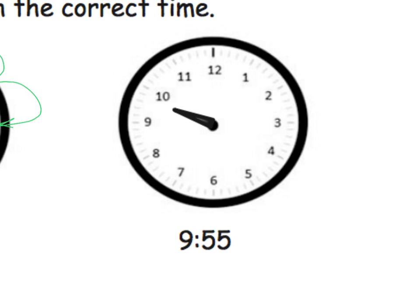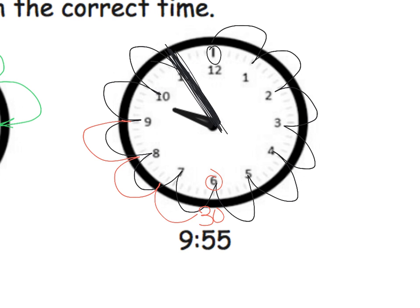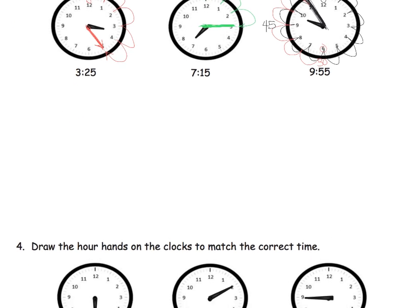The last one is 9:55. Parents and teachers, if you have students who can work this backwards, by all means let them. But we can do it the slow way — start at 12 and go: 5, 10, 15, 20, 25, 30, 35, 40, 45, 50, 55 — so the minute hand goes toward the 11. Or students might recognize that 6 is 30 and continue counting from there: 35, 40, 45, 50, 55. Students might learn to start at a benchmark like 45 and count on.